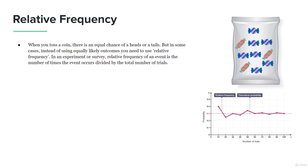But in some cases, instead of using equally likely outcomes, you need to use relative frequency. In an experiment or survey, relative frequency of an event is the number of times the event occurs divided by the total number of trials.